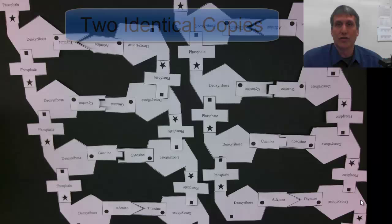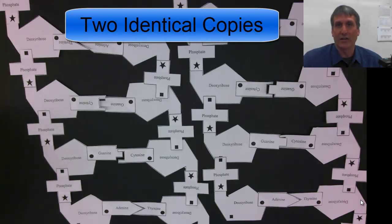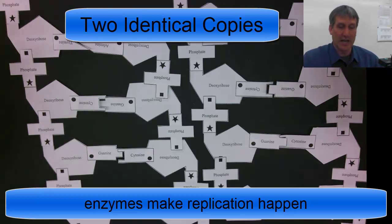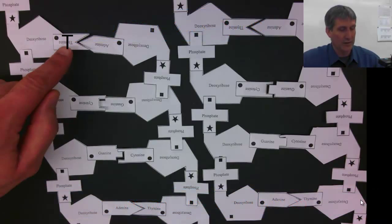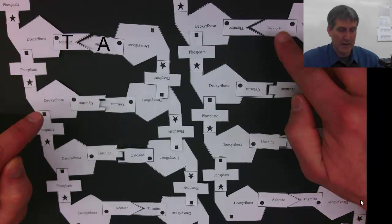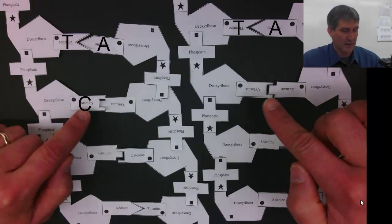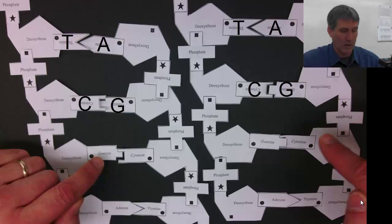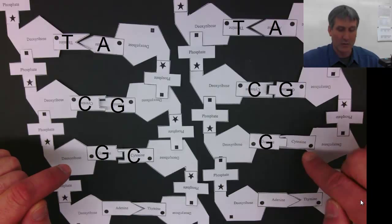Now I have two identical copies of the original double-stranded DNA that I started with. It was accomplished by the DNA unzipping and each existing strand being used as a template to construct a new strand. And if you'll notice, you have thymine-adenine here, thymine-adenine there, cytosine-guanine, cytosine-guanine, guanine-cytosine, guanine-cytosine. These are both exact copies of each other.